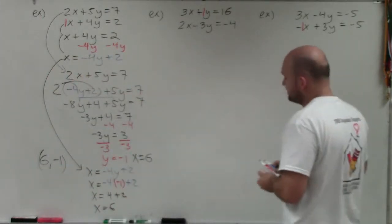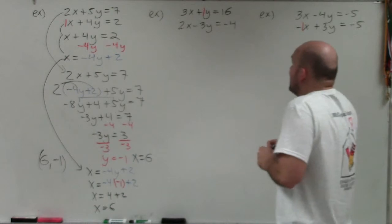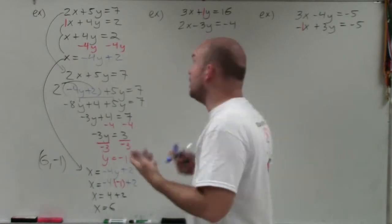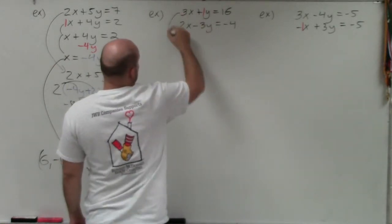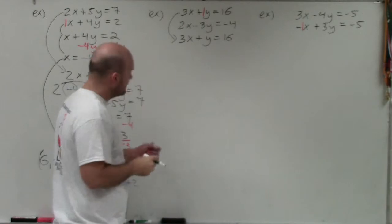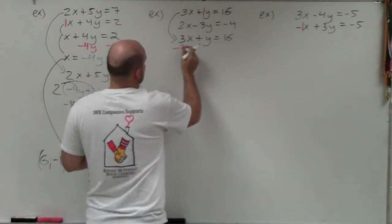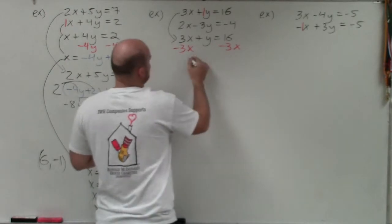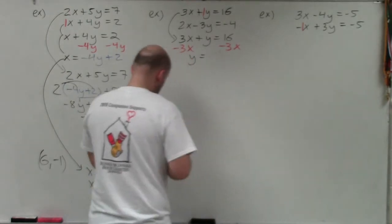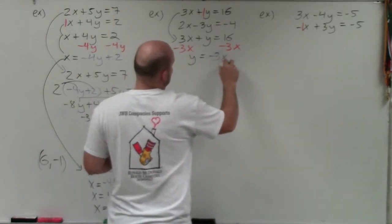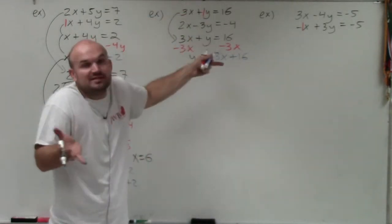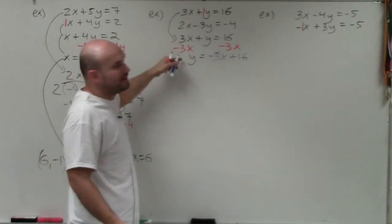Now let's get into the next example. The coefficient of 1 is now on y, and it's in the first equation — but that's perfectly fine, you do the same thing. So: 3x plus y equals 16. Solving for y by subtracting 3x from both sides gives y equals negative 3x plus 16. It would be better if it were already solved for y, but it had a coefficient of 1 so we quickly solved.